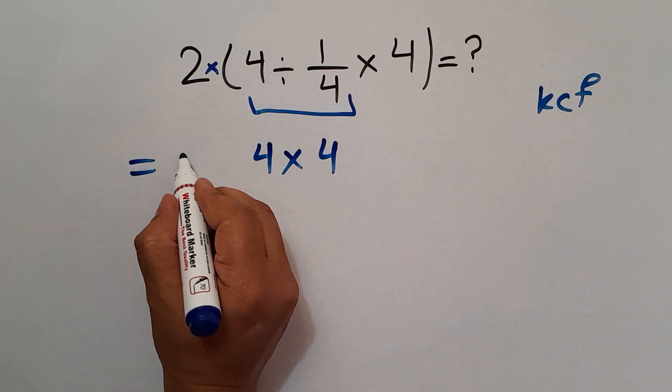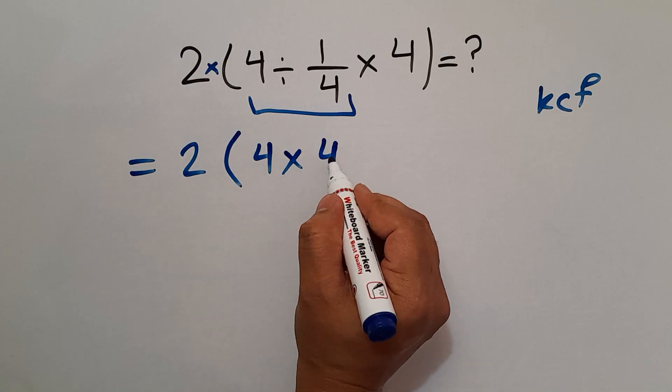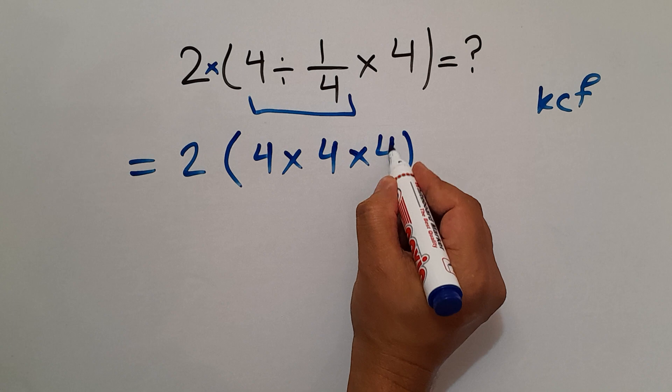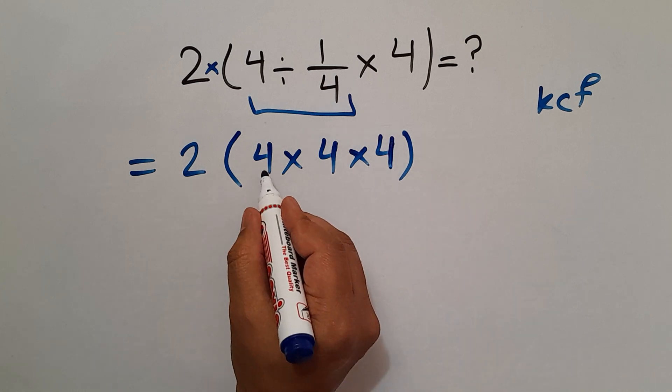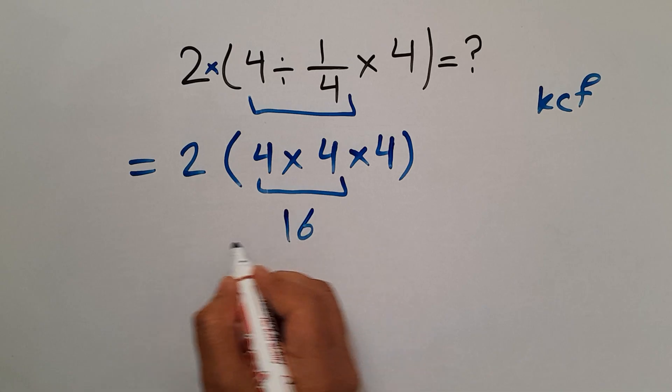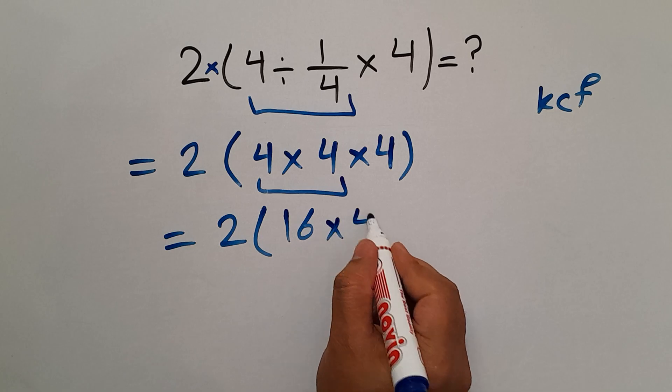So we have 2 times 4 times 4 and times 4. Okay, and now, 4 times 4 equals 16. So we have 2 times 16 times 4.